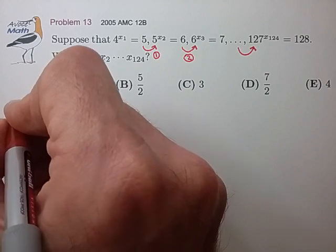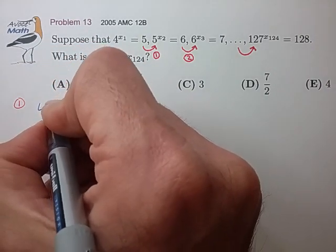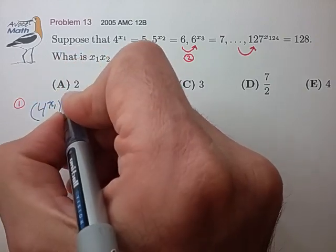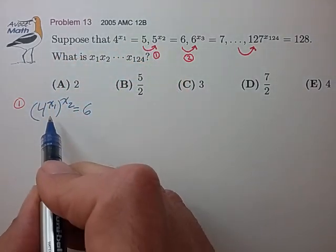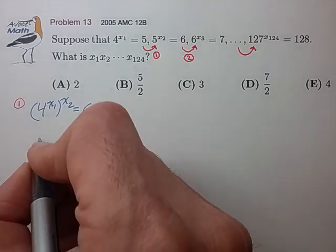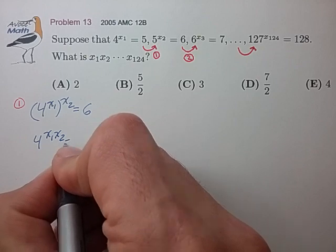For substitution number 1, we'll have that 4 to the x1 to the x2 is equal to 6. Using the product rule for nested exponents, we have 4 to the x1 times x2 is equal to 6.